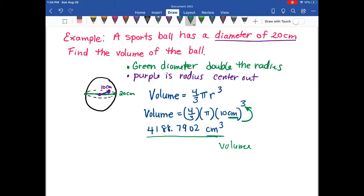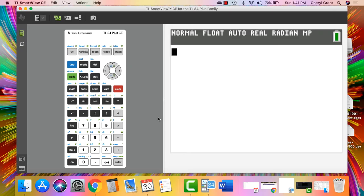Now let's check to see how we'd actually put that in on the calculator. To put this in the calculator, you're going to put in parentheses your fraction 4/3. I'm going to do 4 divided by 3, close parentheses.